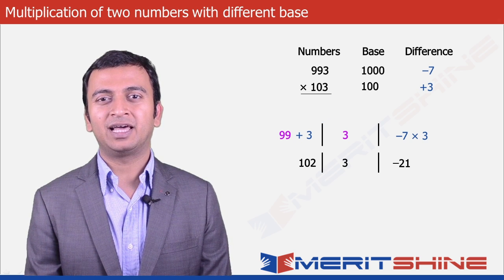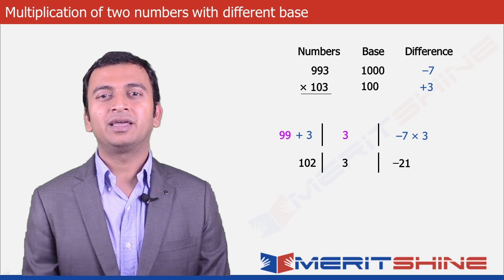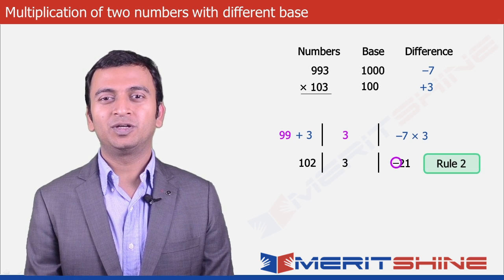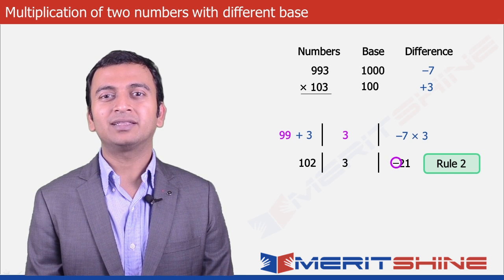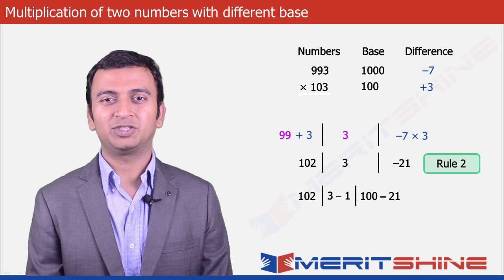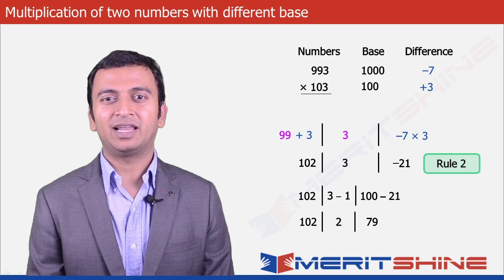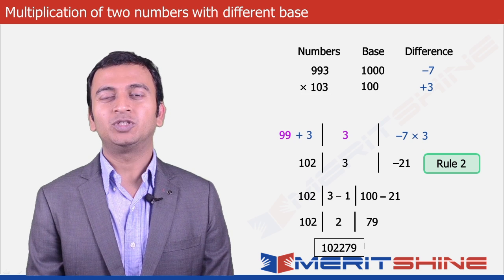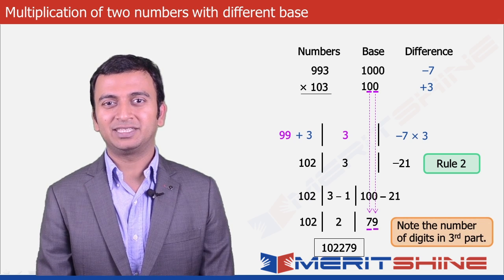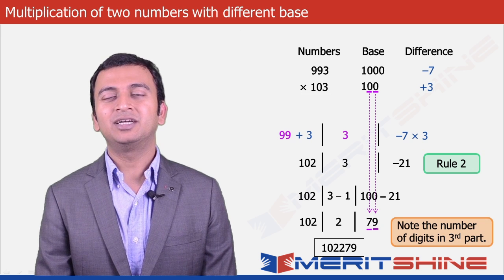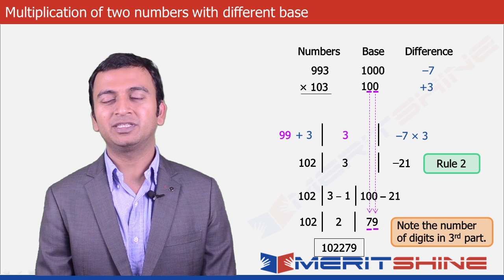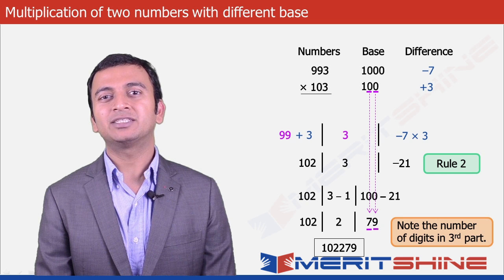Now we can get our final answer by clubbing these three parts. Here comes rule 2: none of the parts can be negative. So to make the third part positive, we will have to borrow 1 from the second part, making it 3 minus 1 = 2, and the third part becomes 100 minus 21 = 79. So our final answer would be 102279, and the number of digits in the third part is always equal to the number of zeros in the base of the smaller number.